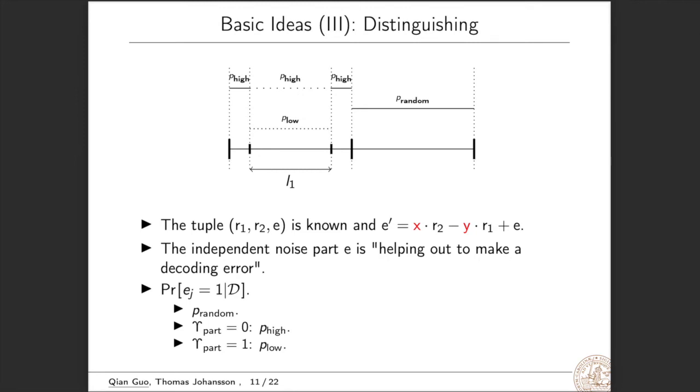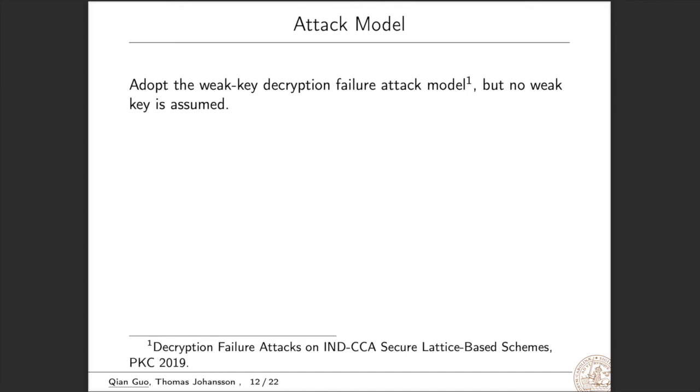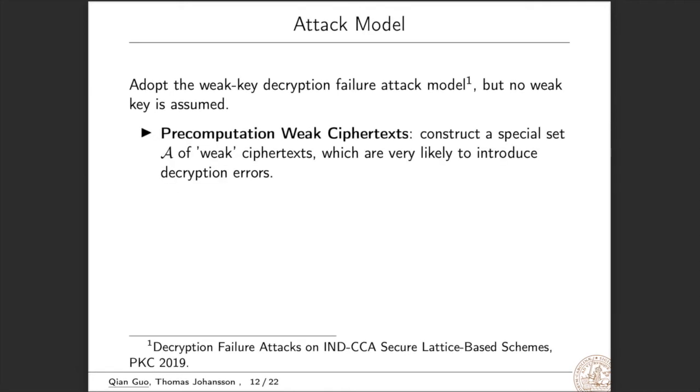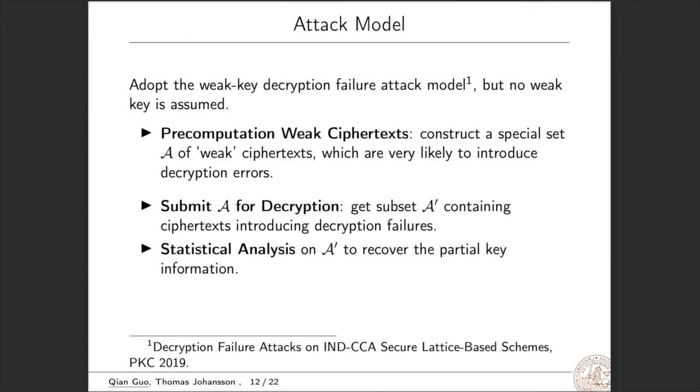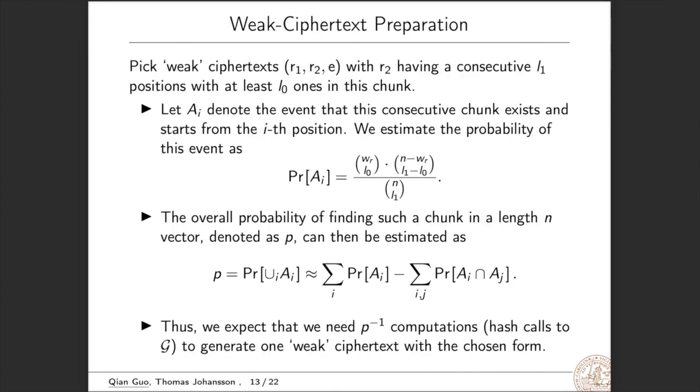Now we start to introduce the attack model. We adopt the weak key decryption failure attack model published at PKC 2019. But here no weak key is assumed. This attack model consists of several steps. In the first step, we do pre-computation for weak ciphertext. We construct a special set A of weak ciphertext, which are very likely to introduce decryption errors. In the second phase, we submit A for decryption, so we can get subset A prime containing ciphertext introducing decryption failures. We then do statistical analysis on A prime to recover the partial key information. Last, we may also include a post-processing step.